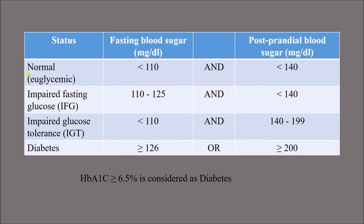After conducting blood sugar testing, the cut-off levels for diagnosis of diabetes are: normal fasting sugar should be less than 110 mg/dL and postprandial less than 140 mg/dL. If fasting level is 126 or more, or postprandial is 200 or more, it is considered diabetes. When fasting blood sugar is between 110 and 125 and postprandial is in normal range, it is known as impaired fasting glucose.